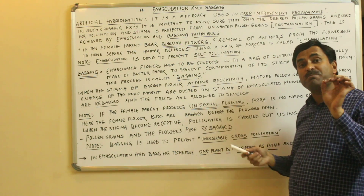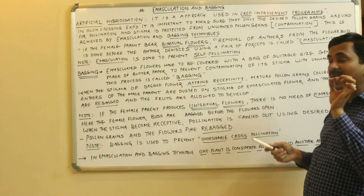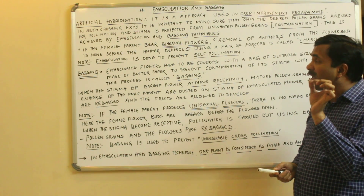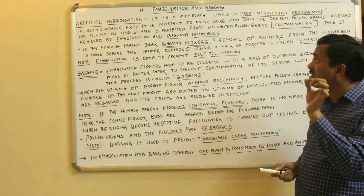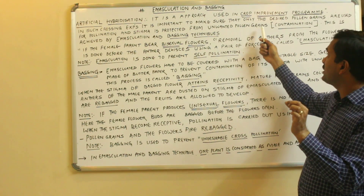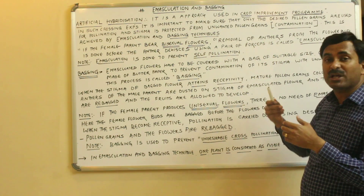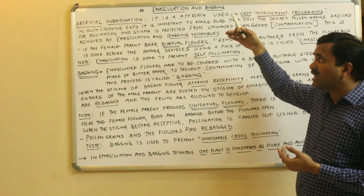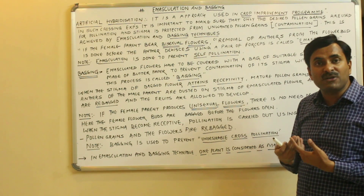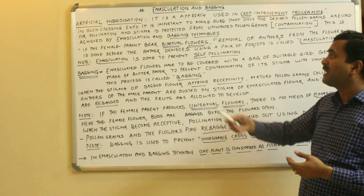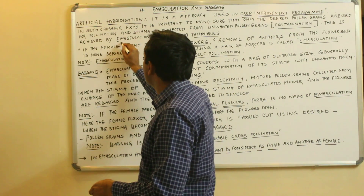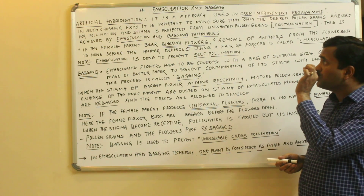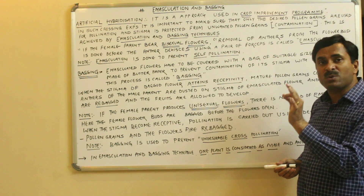In artificial hybridization crossing experiments, it is important to make sure that only the desired pollen grains are used for pollination. Therefore, the stigma is protected from unwanted pollen grains — meaning the stigma is protected from being contaminated by unwanted pollen grains. This is achieved by the use of two techniques: emasculation and bagging.